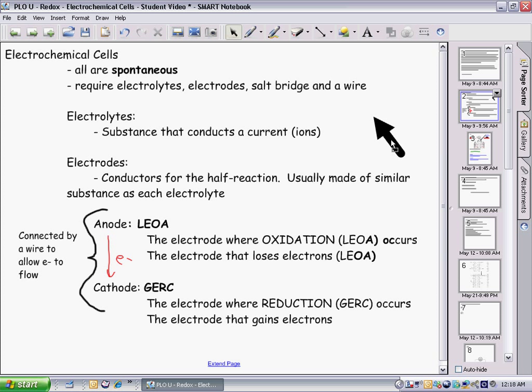To review from yesterday, we've started electrochemical cells in which all reactions are spontaneous. Electrochemical cells require electrolytes, electrodes, a salt bridge, and a wire. The salt bridge allows ions to move, the wire allows electrons to move, creating a complete circuit.